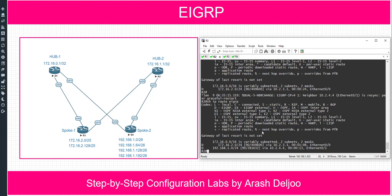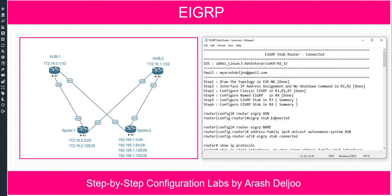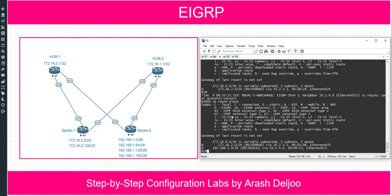Let me inform you that when you configure EIGRP stub without any keyword after it, the default is both 'connected' and 'summary'. This means the stub router can advertise both connected networks and summary networks by default. Let me demonstrate this by first removing the summarization configuration on router 3 and router 4.